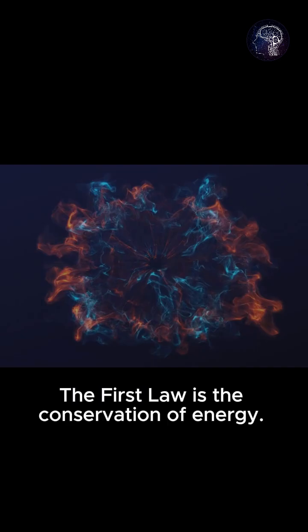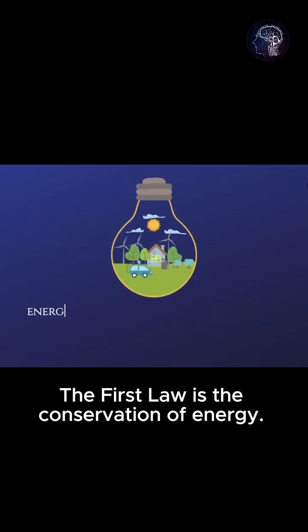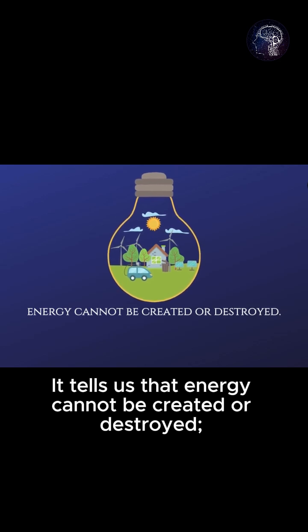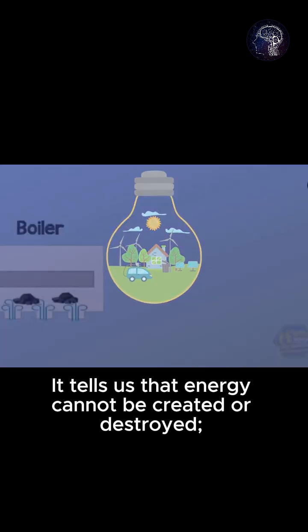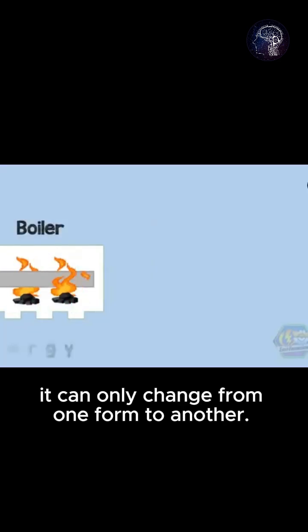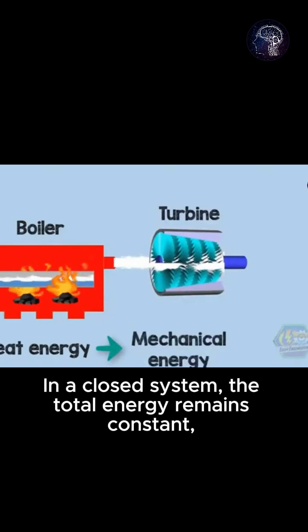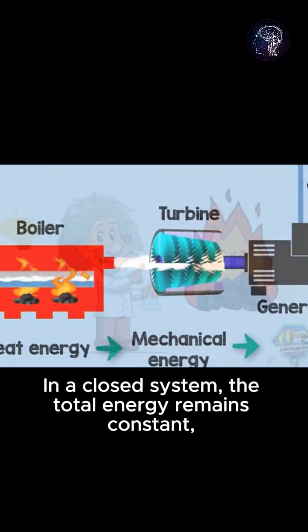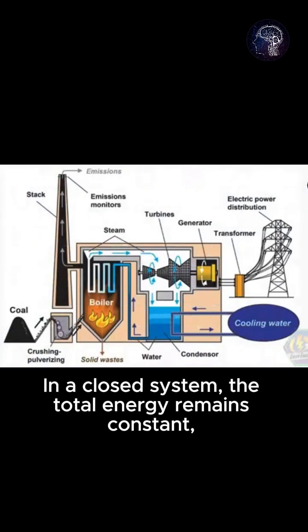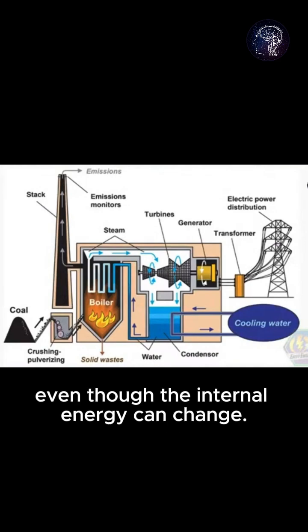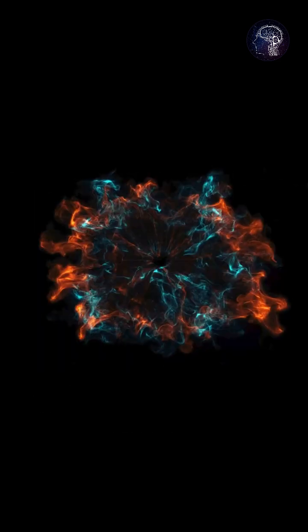The first law is the conservation of energy. It tells us that energy cannot be created or destroyed — it can only change from one form to another. In a closed system, the total energy remains constant, even though the internal energy can change.